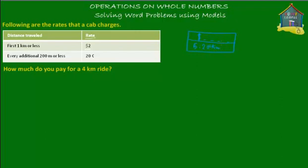On the meter there will be a reading for how much amount is due and a reading for how much distance you have traveled. So this is the amount and this is the distance.